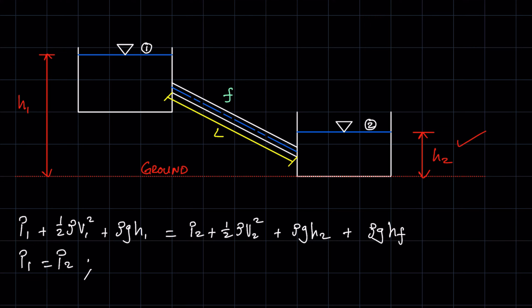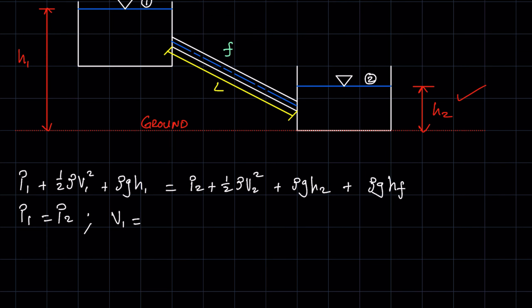To illustrate: if you're trying to observe the growth of a child, you don't see it happening instantaneously — one moment the child is short, the next they've grown considerably, but it's so slow you can't see it in real time. Similarly, the velocity in the reservoirs is negligible. So v1 = v2 = 0.